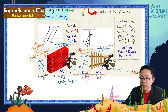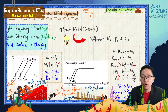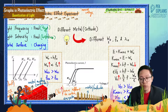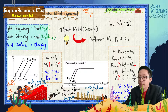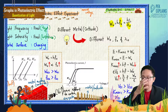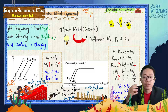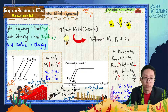Different metals have different work function W₀, threshold frequency, and threshold wavelength. Any metal has its own values for these. The formula is: work function equals hf₀, or also equals hc over λ₀. So different metals have different W₀, different f₀, and different λ₀. Not all light can eject electrons — it depends on the metal type. A light that ejects electrons from one metal may not eject from another, because each metal has a different threshold frequency or threshold wavelength.